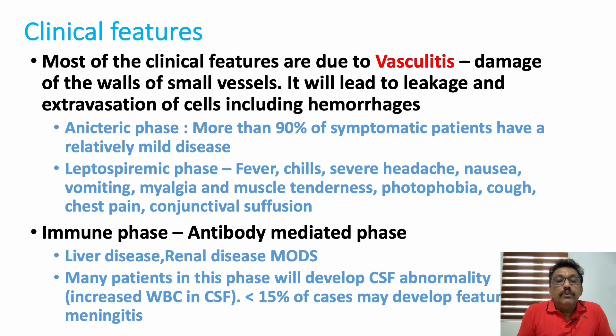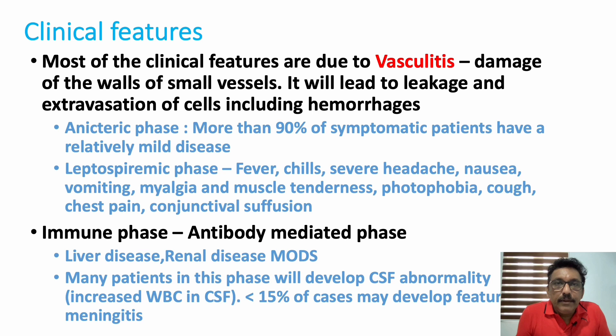In the second phase, multi-organ dysfunction is very common. Creatinine can be elevated due to renal failure. Creatine kinase is elevated because of muscle involvement — inflammatory myositis is common, so CK can be highly elevated. Some patients can have liver involvement with SGOT and SGPT marginally elevated.